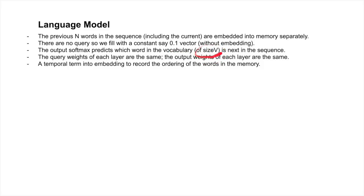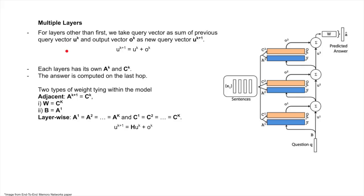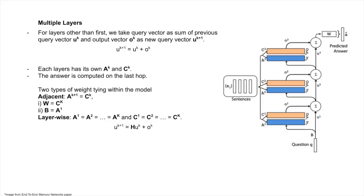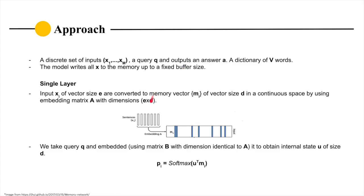In the next sequence, the output weight of each layer are the same, and the query weights are also the same. The temporal term into the embedding records the order of words in the memory, which uses a fixed order like l in the memory. While putting the multiplication here, like A into x into l, to get the order.